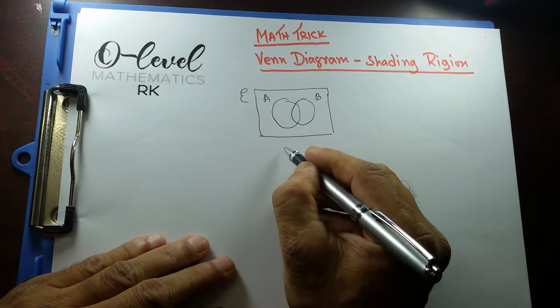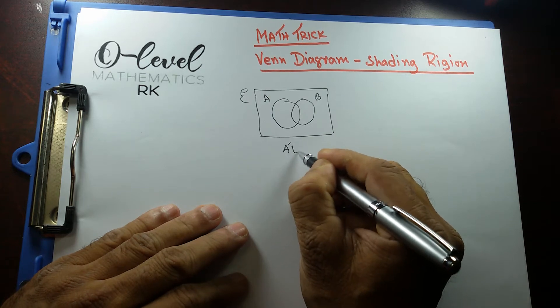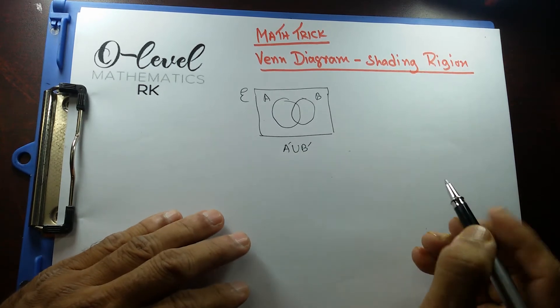And the question is saying, shade A prime union B prime.